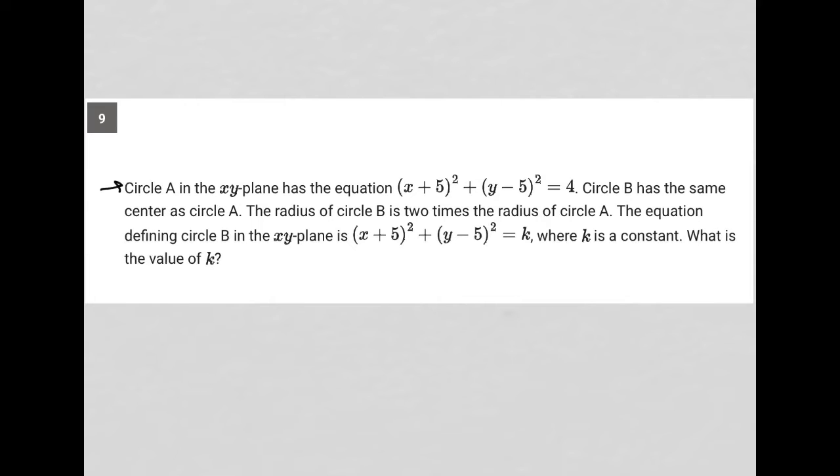This question says circle A in the xy plane has the equation, I'll just circle this, x plus 5 squared plus y minus 5 squared equals 4.